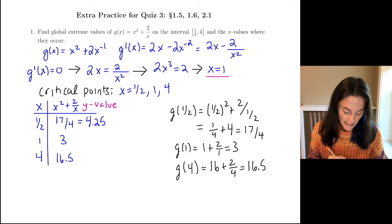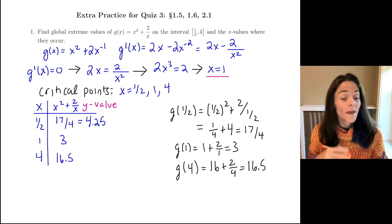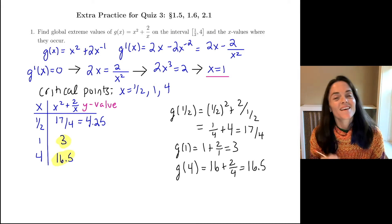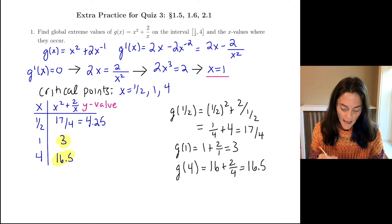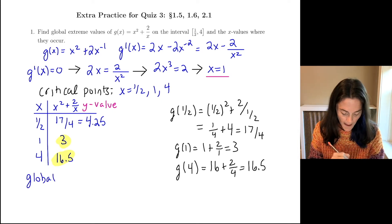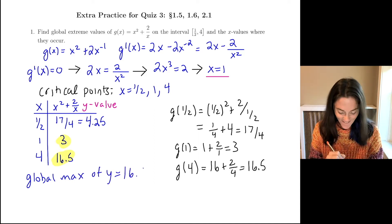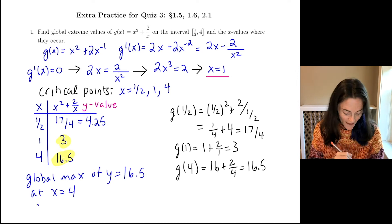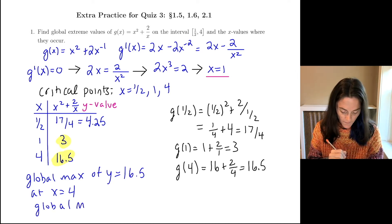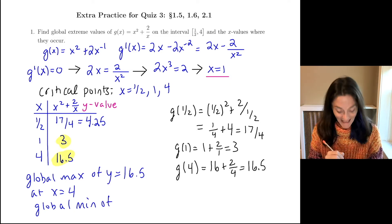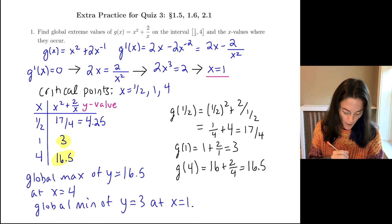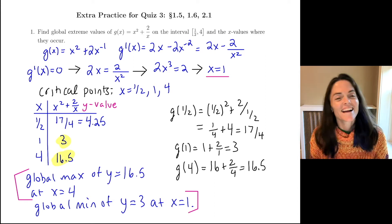Just now we compare. Seeing the values like this now we can actually compare. The highest y value is 16.5, and the lowest y value is 3. So we have a global max of y equals 16.5, and this occurs at x equals 4. And then we have a global min of y equals 3, and this occurs at x equals 1. So this is the end of this problem.